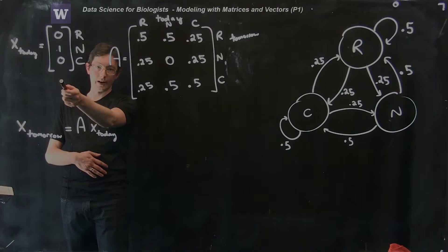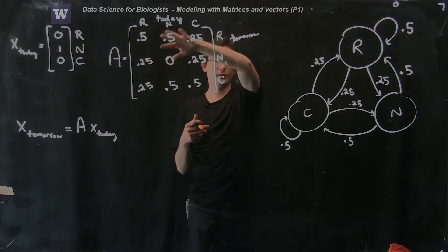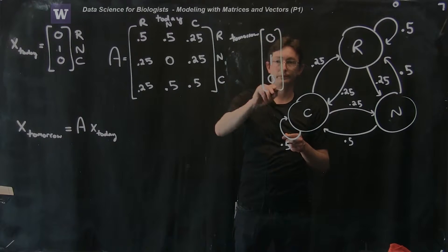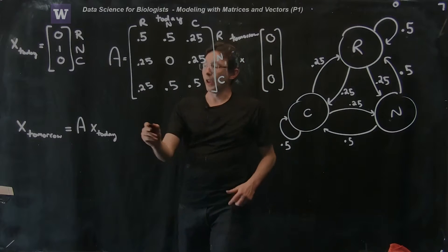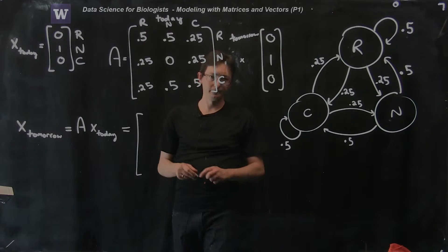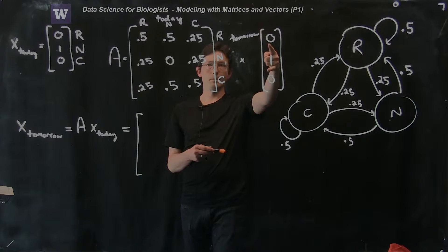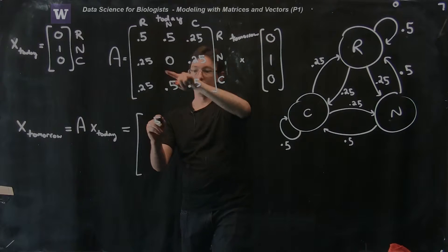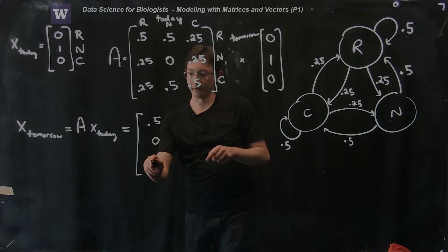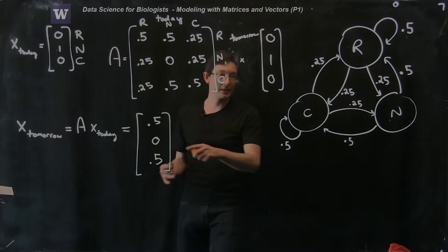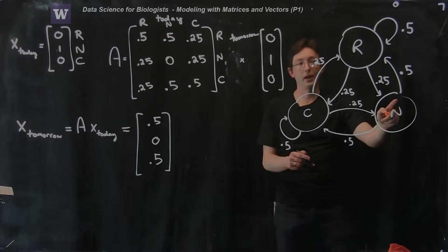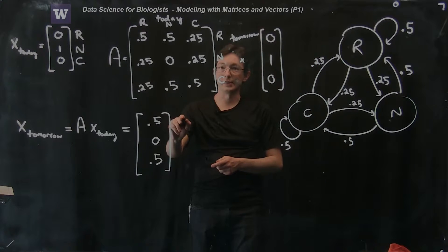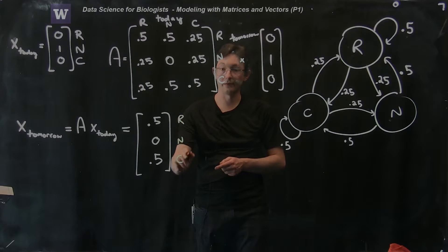Let's do this for the vector [0, 1, 0] today — we multiply the A matrix by [0, 1, 0] and x_tomorrow comes out to be [0.5, 0, 0.5]. This is exactly what the diagram tells us: it was nice today, so there's a 50% chance it'll be rainy tomorrow and a 50% chance it'll be cloudy tomorrow — 50% rain, 0% nice, 50% cloud.